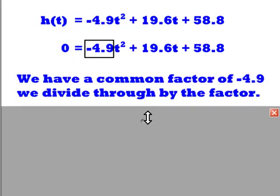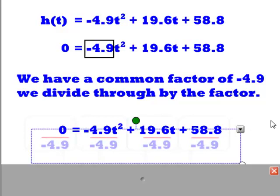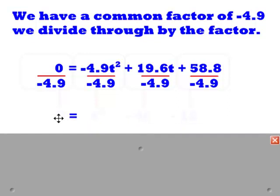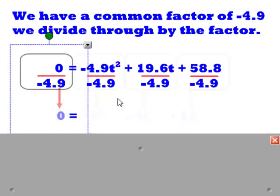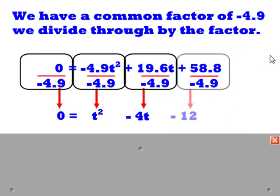As we test it on our calculator, we find that we do have a common factor of -4.9, so we'll divide through by the factor. We have to divide each term on either side of the equation. 0 divided by -4.9 leaves us with 0. -4.9t² divided by -4.9 leaves us with t². 19.6t divided by -4.9 leaves us with -4t, and 58.8 divided by -4.9 leaves us with -12.